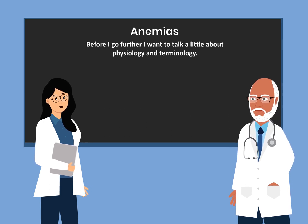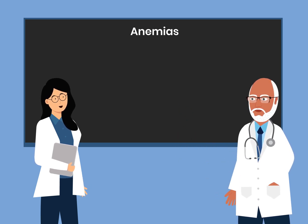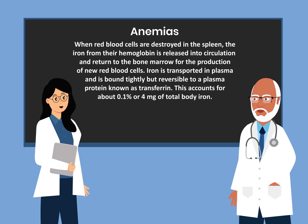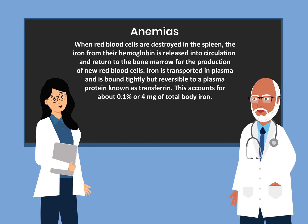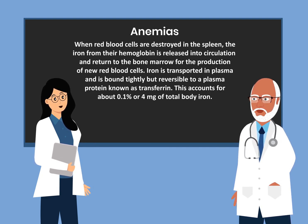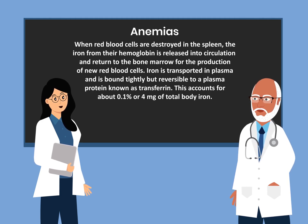Before I go further, I want to talk a little about physiology and terminology. When red blood cells are destroyed in the spleen, the iron from their hemoglobin is released into circulation and returned to bone marrow for the production of new red blood cells. Iron is transported in plasma and is bound tightly but reversibly to a plasma protein known as transferrin. This accounts for about 0.1%, or 4 mg, of total body iron.